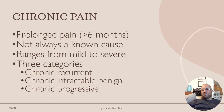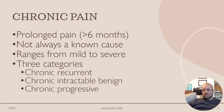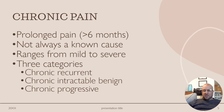Chronic intractable benign pain describes long-lasting pain that is constant or near-constant and doesn't respond well to treatment but is not caused by a life-threatening condition. While the pain may be severe and persistent, it is not associated with a malignant or terminal illness. Examples include certain types of chronic low back pain or neuropathic pain syndromes. Chronic progressive pain is characterized by pain that worsens over time and is often associated with a progressive underlying condition, such as osteoarthritis.